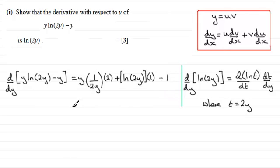So it's just a question now of tidying this up and I can see that what I've got here is y times 1 times 2 which is going to be 2y divided by 2y that's just going to give me 1.